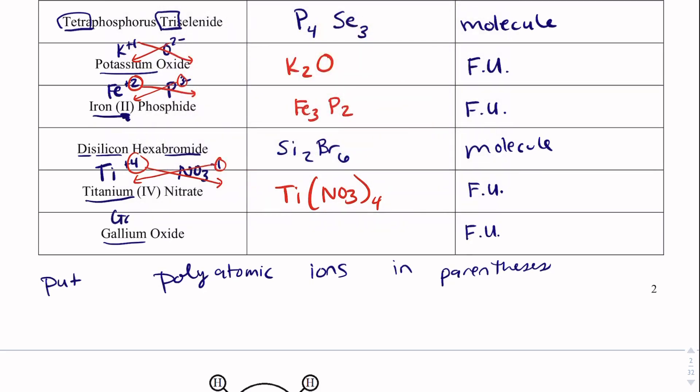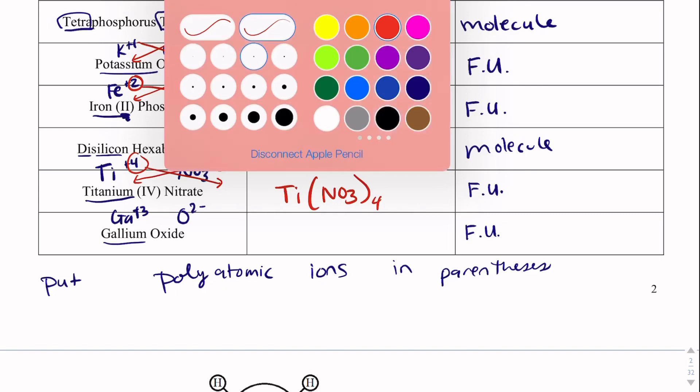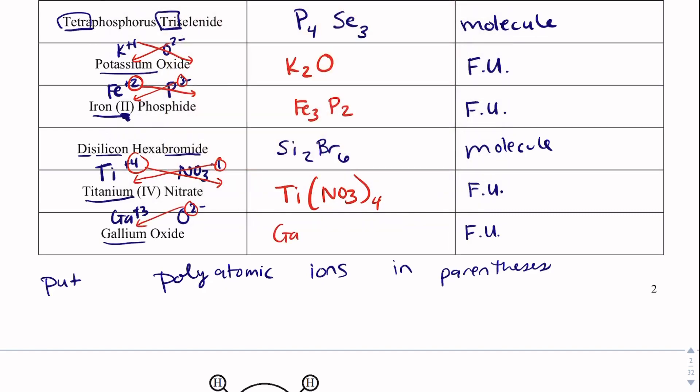Gallium is Ga with a plus 3 charge. Oxide is O2 minus. We will take that 2, give it to gallium, Ga2. Take that 3, give it to oxygen, O3.